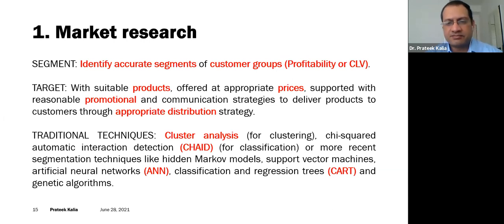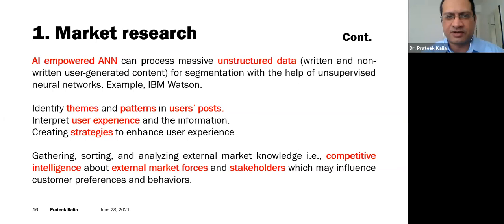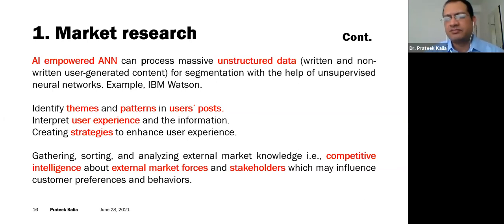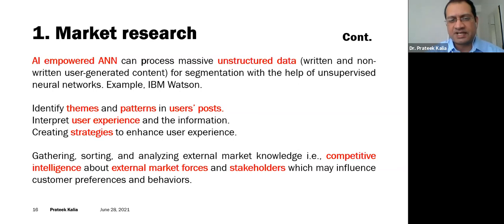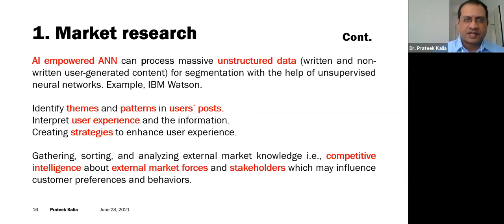Traditionally we have techniques like cluster analysis, artificial neural networks, regression trees, and genetic algorithms. But with AI-powered ANN systems — I will take the example of IBM Watson — massive unstructured data, whether written or non-written such as pictures, videos, or user-generated content like tweets, can be used for segmentation. This is processed through unsupervised neural networks that identify themes, patterns, user posts, and user experience to generate strategies. This provides competitive intelligence and helps position products as per external market forces and customer preferences.